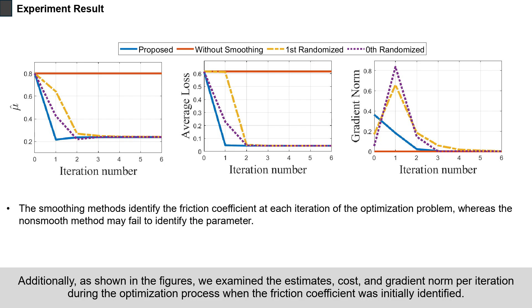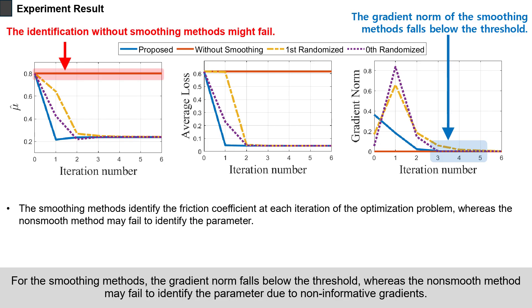Additionally, as shown in the figures, we examined the estimates, cost, and gradient norm per iteration during the optimization process when the friction coefficient was initially identified. For the smoothing methods, the gradient norm falls below the threshold, whereas the non-smooth method may fail to identify the parameter due to non-informative gradients.